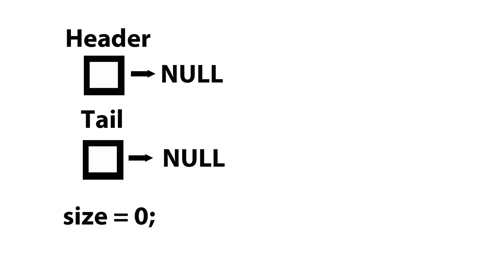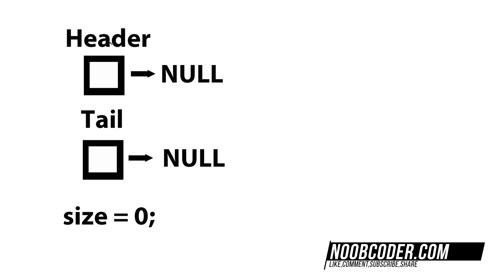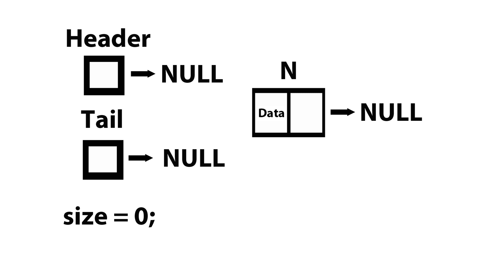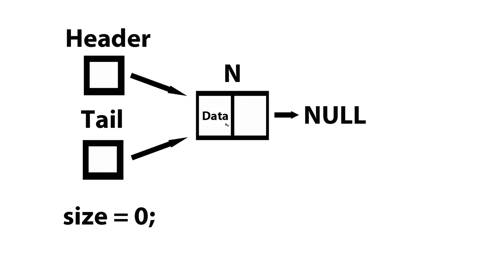So let's take a look at the first case — if the list is empty. This gets initialized by our default constructor: header gets set to null, tail gets set to null, and size is equal to zero. The first step is to create the node that we want to prepend to our list. The second step is to have the header and the tail both point to the newly inserted node, because since there's only one node within our linked list, it is both the first node and the last node. Now that we've prepended our newly created node, all we have to do is increment the size.